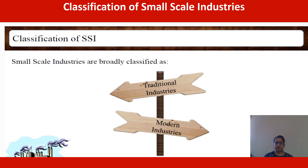Small-scale industries can be broadly classified as traditional industries and modern industries. Traditional industries are highly labor intensive, with a smaller share compared to modern small-scale industries. In traditional small-scale industries, a large amount of labor runs the operations. Examples include agarbatti manufacturing, rice mills, and liquid soap manufacturing.